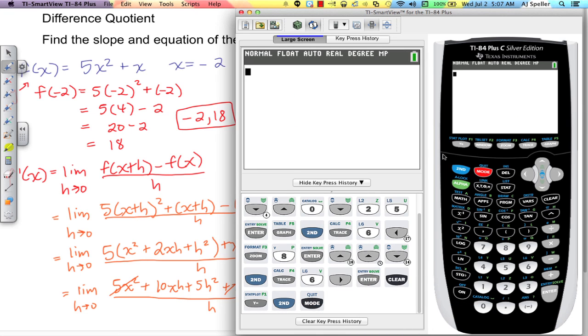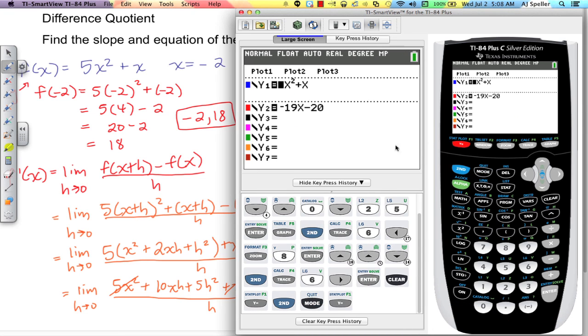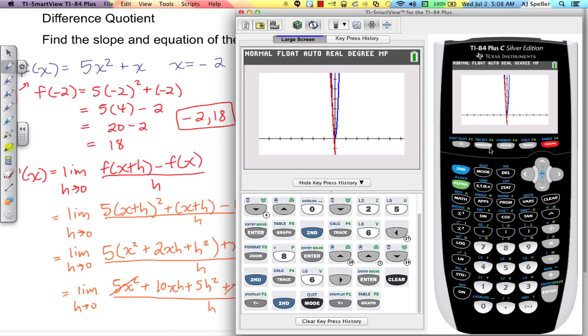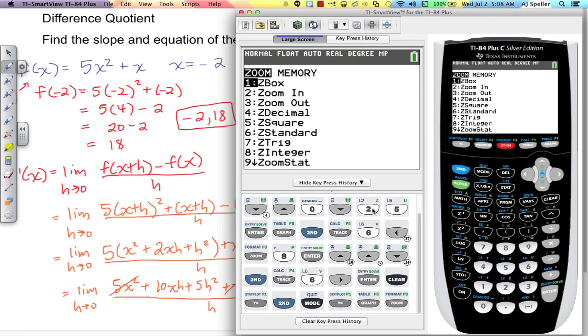All right, with the calculator I've already gone ahead and entered in the two equations where y1 is the original equation and y2 is the equation of the tangent line or the derivative. Let's go ahead and graph those, and let's go to zoom and let's set it to 8 which would be integer.